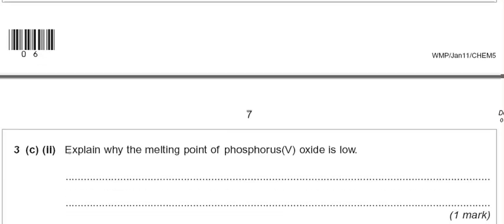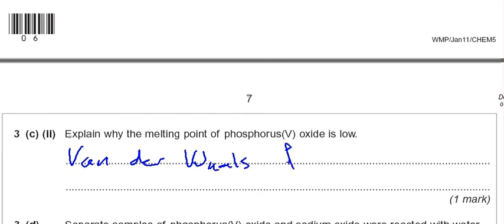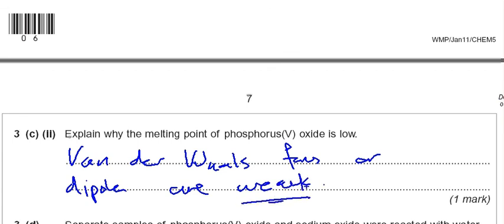3C2 says: explain why the melting point of phosphorus 5 oxide is low. The reason why it's low — and it's a one-marker — is van der Waals forces. Van der Waals forces are weak. Because these van der Waals forces, your dipoles are weak, the attractions are weak, and your intermolecular bonds are weak. Therefore, you can have a low melting point. And that was that one.